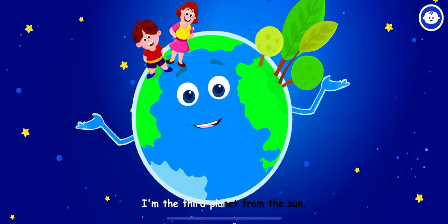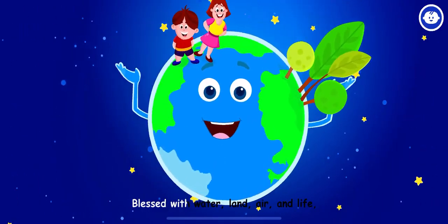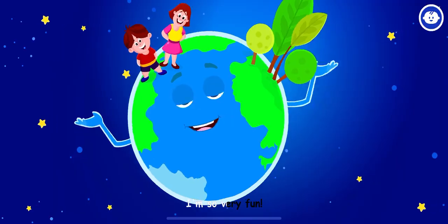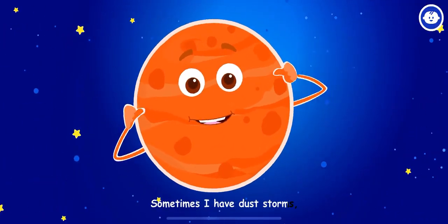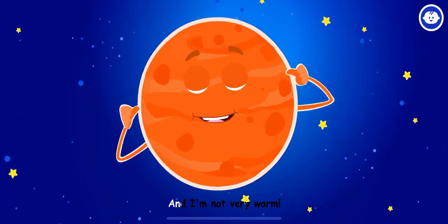I am Earth, I'm the third planet from the sun. Blessed with water, land, air and life, I'm so very fun. My name is Mars, sometimes I have dust storms. I'm very, very red, and I'm not very warm.